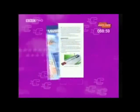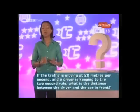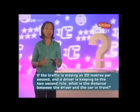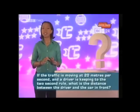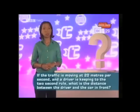Here's a question about speed from a past test paper, which uses the two-second rule for car drivers from the Highway Code. It says: leave enough space between you and the vehicle in front so that you can pull up safely if it suddenly slows down — a two-second time gap may be sufficient. Use stationary objects like lamp posts to help keep a two-second gap. The question is: if traffic is moving at 20 meters per second and a driver keeps to the two-second rule, what is the distance between the driver and the car in front?